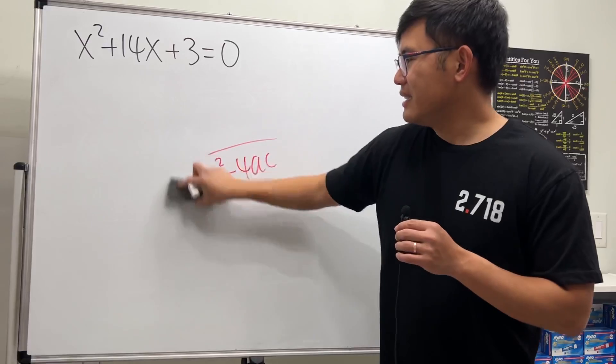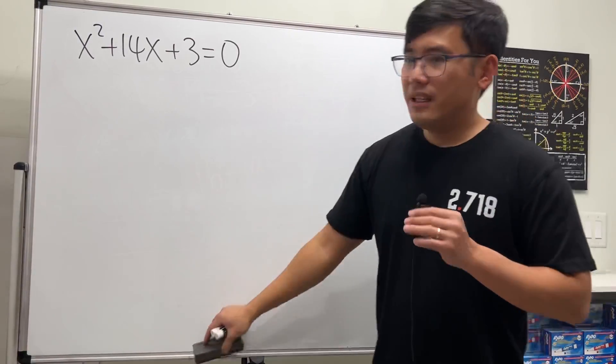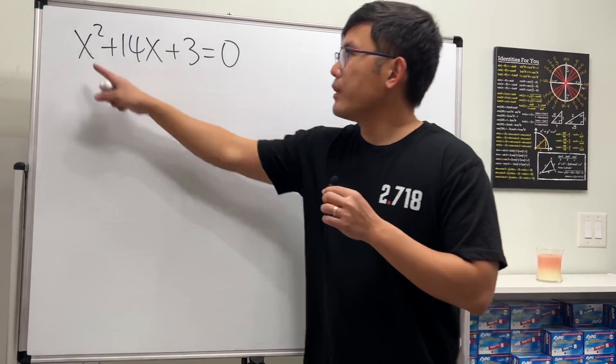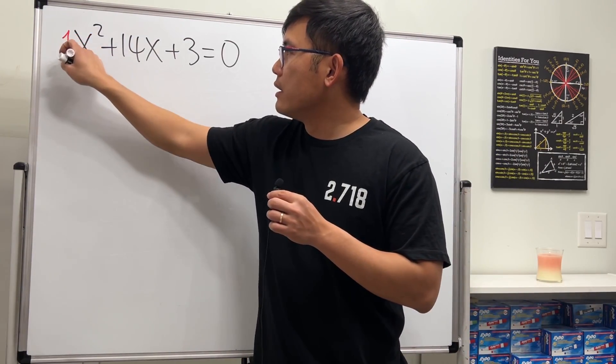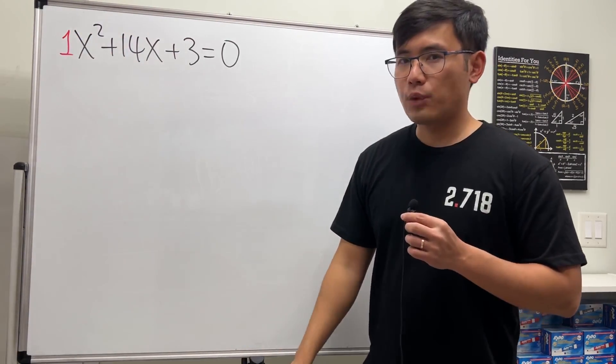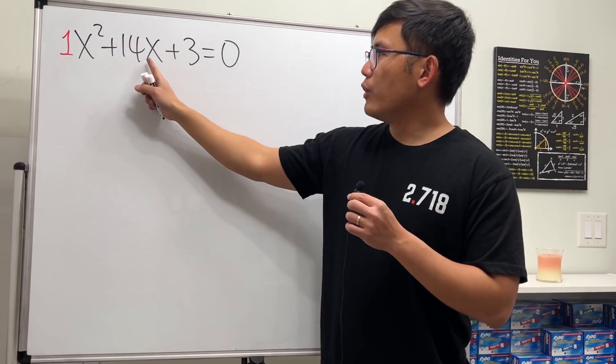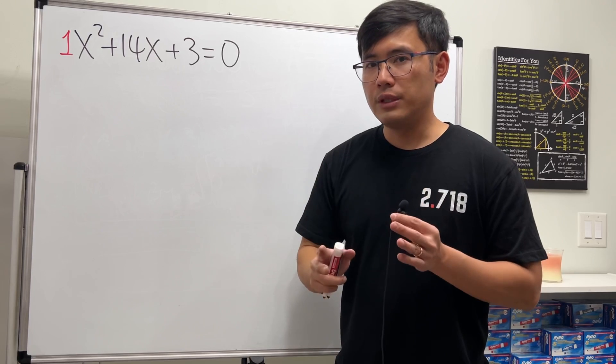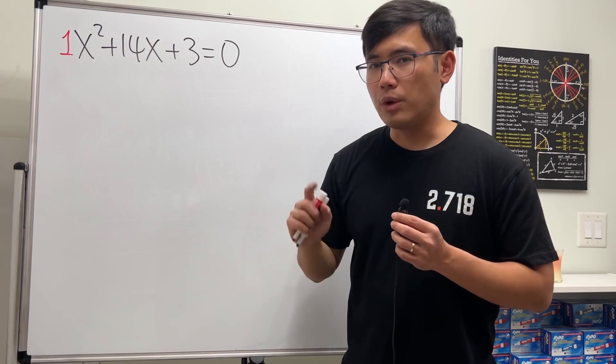Not a good idea. In fact, the completing square method is better because we already have a 1 in front of the x squared, and the coefficient of x is 14, which is an even number. In this case, completing the square will beat the quadratic formula guaranteed.